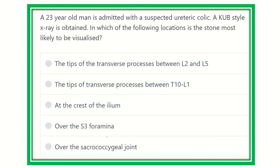From the options, we have to find out the normal location of the stone in the ureter. So we have to first find out the normal anatomy of the ureter relating to the vertebral column, and then it will be easy to find out the location where the stone may be impacted.